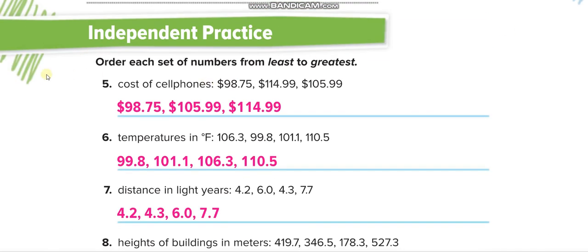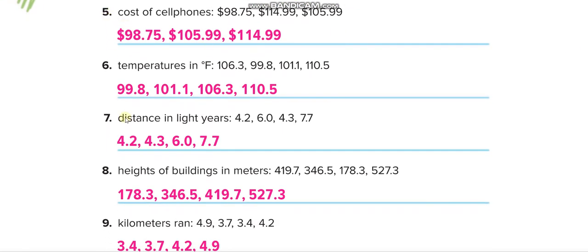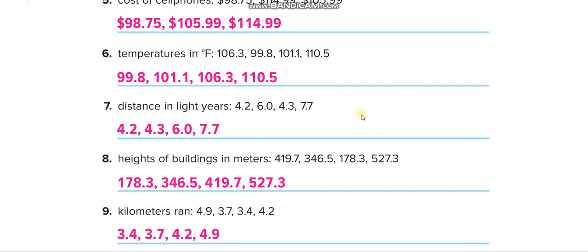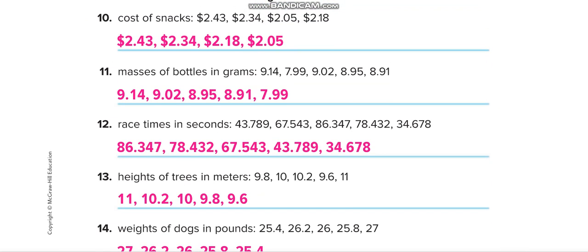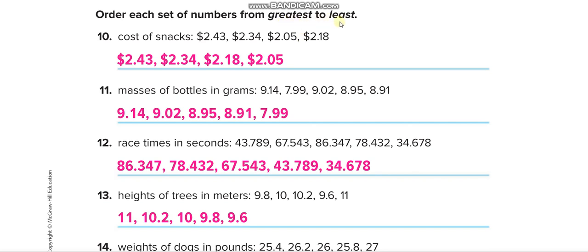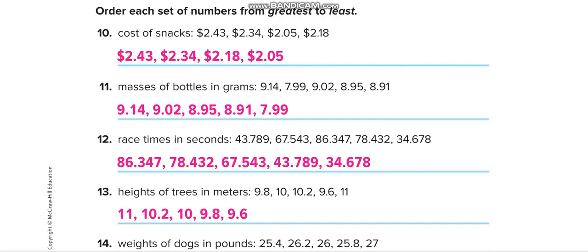On the next page is independent practice. For questions 5 to 9, order from least to greatest — first solve by yourself, then match your answers from this video. For questions 10 to 14, order from greatest to least. These are the answers shown — first solve independently, then check your answers against the video.